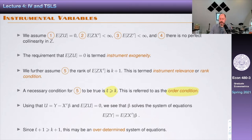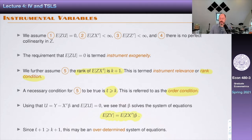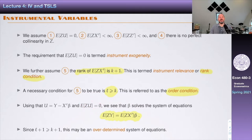So now we can write u as y − x'β, and then since E[z·u] = 0, putting that together we get this system of equations that beta solves. As opposed to the case of least squares, it's not so easy to just move things to the other side, because this may not even be square. In particular, if we have more instruments than regressors, this is going to be an overdetermined system of equations. So we have to think about how we're going to deal with that, but regardless, beta will solve this system of equations.